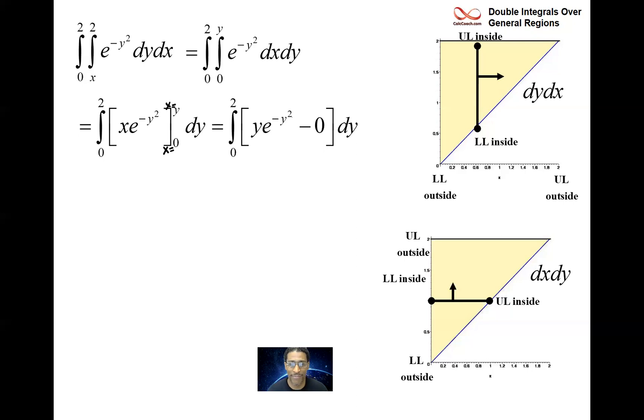Lower limit gives you zero. What's the u sub? We did it already. Here u is minus y squared. So du is minus 2y dy divided by negative 2. The replacement to y dy is negative one half of du.